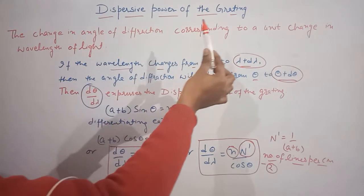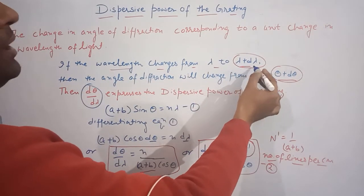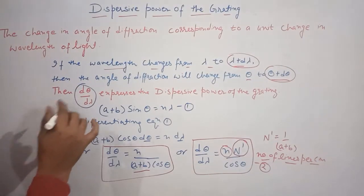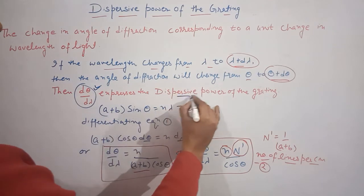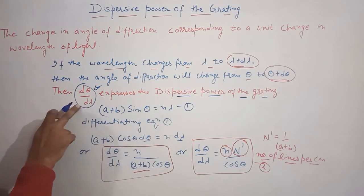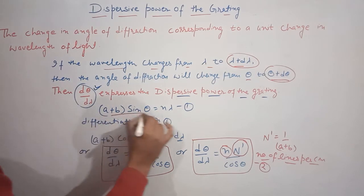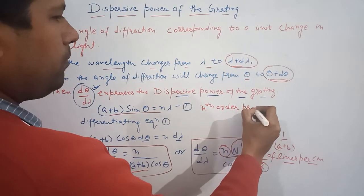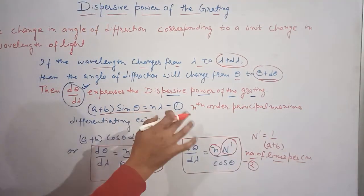To recap: dispersive power is the change in angle of diffraction corresponding to a unit change in wavelength of light. If the wavelength changes from lambda to lambda plus d-lambda, then the angle of diffraction changes from theta to theta plus d-theta. This d-theta by d-lambda is the dispersive power of the grating. The nth order principal maxima equation is our starting grating equation.